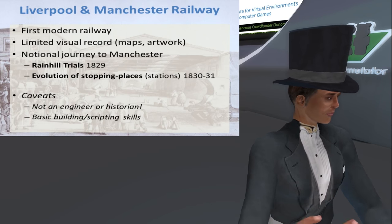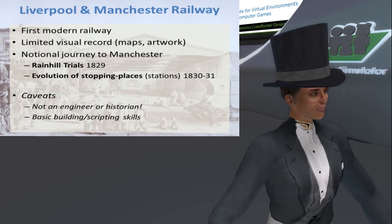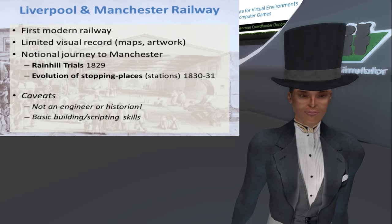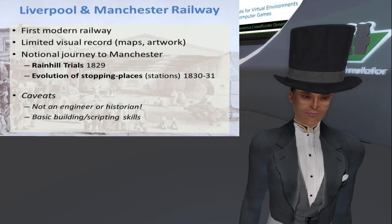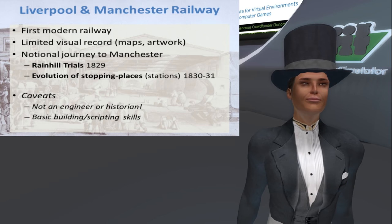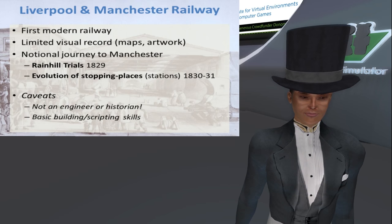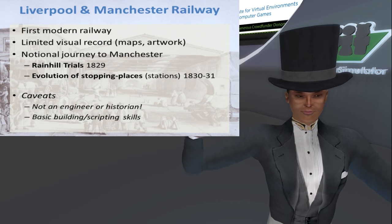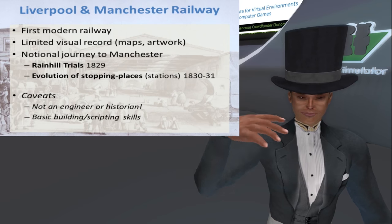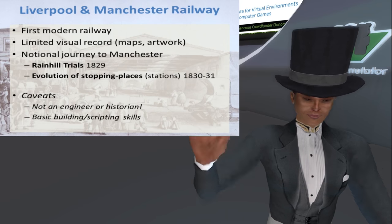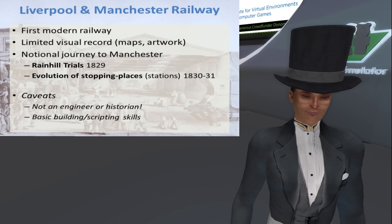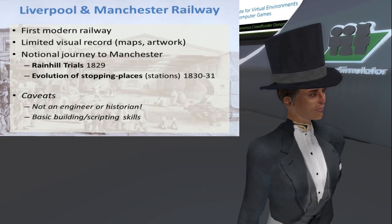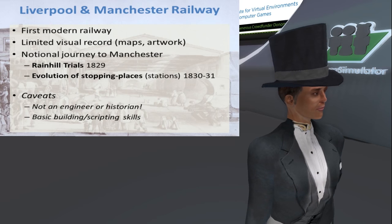In terms of the actual extent of the build at the moment, I guess there are about ten levels. There's a ground terrain aspect to it, and then some nine sky platforms which will take you all the way to Manchester. That's by no means complete, so there's quite a long way still to go.